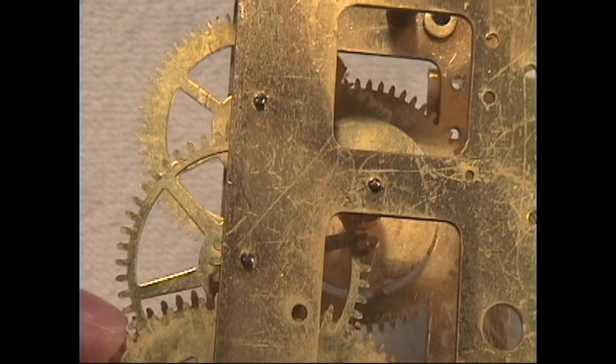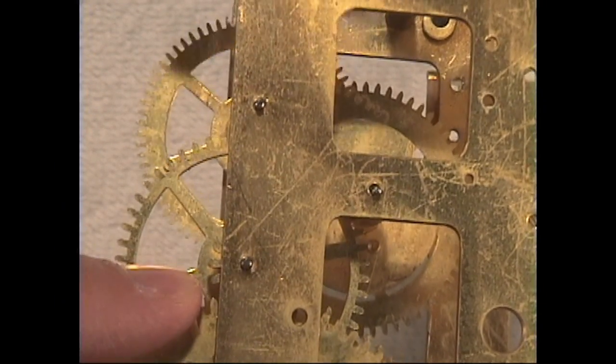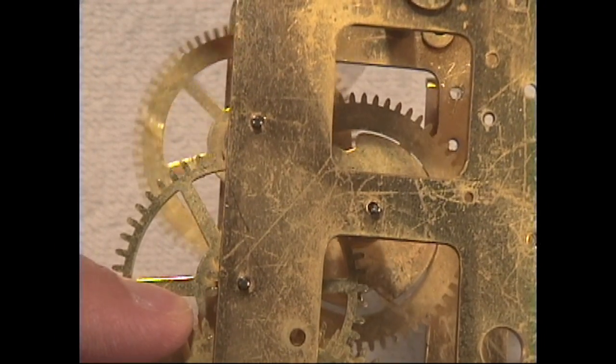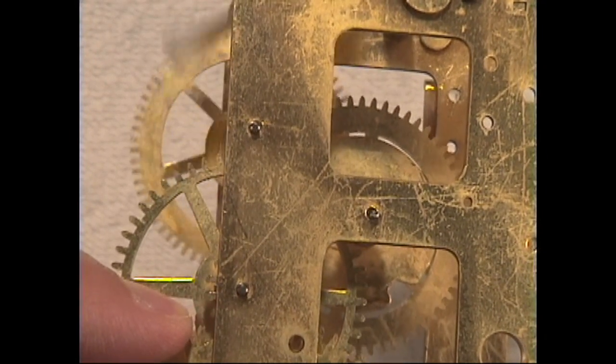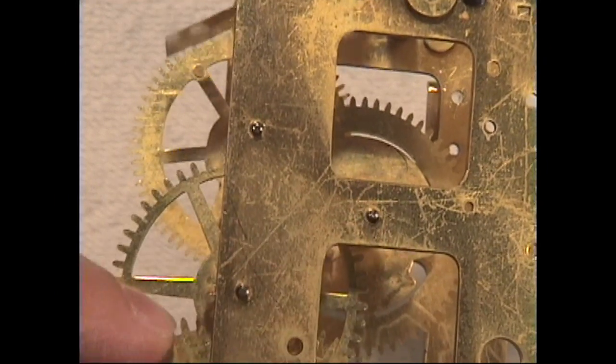If we look at some of these other pivot holes, like take a look at this one over here. Now as the wheel turns, that pivot rocks back and forth. And the reason why it's rocking back and forth is because it's worn a path down that direction.